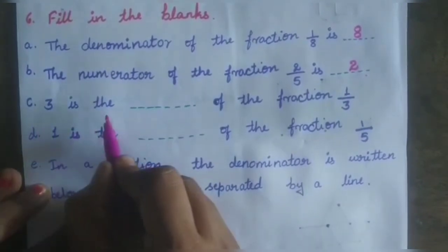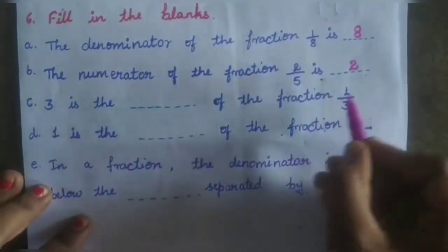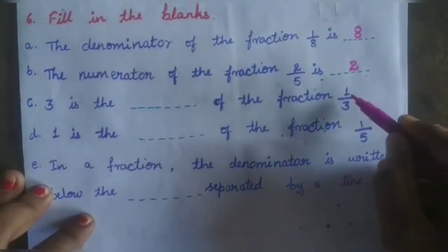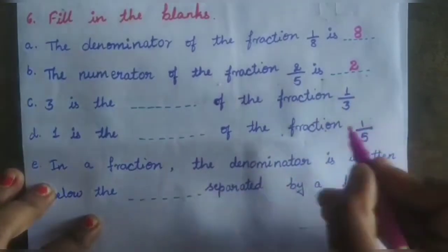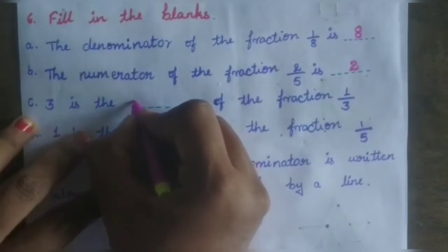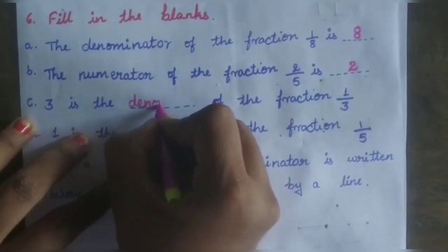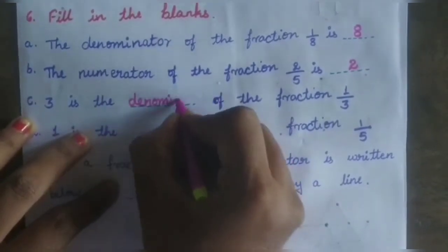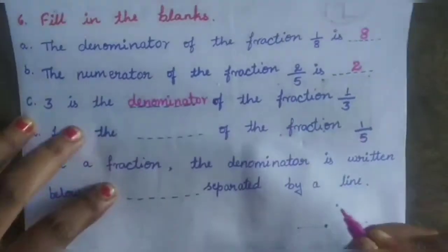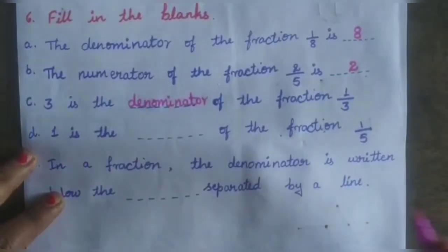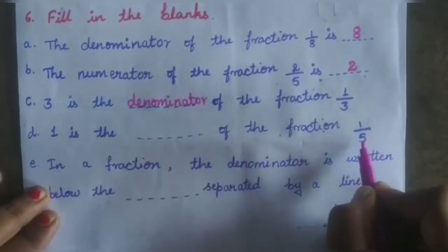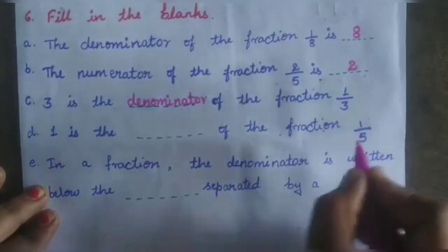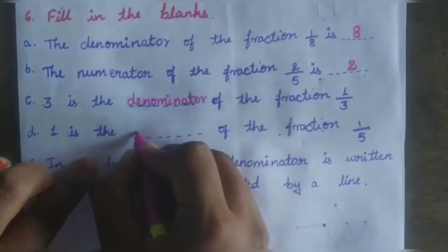Third question: 3 is the blank of the fraction 1 by 3. In the fraction 1 by 3, 3 is the denominator. Fourth question: 1 is the blank of the fraction 1 by 5. In 1 by 5, 1 is the numerator.